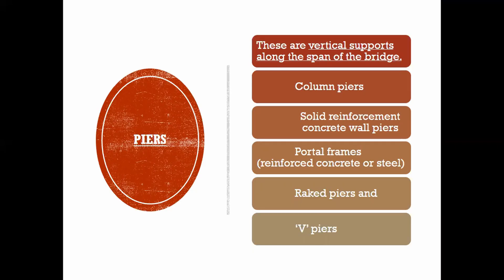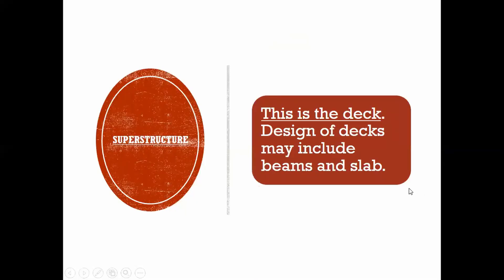There are different types of piers: column piers, solid reinforcement piers, portal frames, raked piers, and V-piers. V-piers we actually see a lot on the highway. Then you get your superstructure, which is just a fancy name for the deck of the bridge — basically your roadway, where the railway goes, or where people walk over. This is essentially your slab, and it includes a beam as well.